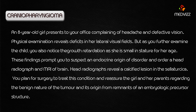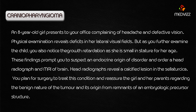An 8-year-old girl presents to your office complaining of headache and defective vision. Physical examination reveals deficits in her lateral visual fields, and you also notice growth retardation as she is small in stature for her age. These findings prompt you to suspect an endocrine origin of disorder. A head radiograph and MRI reveal a calcified lesion in the sella turcica, so you plan surgery and reassure the girl and her parents regarding the benign nature of the tumor and its origin from the remnants of an embryologic precursor structure.